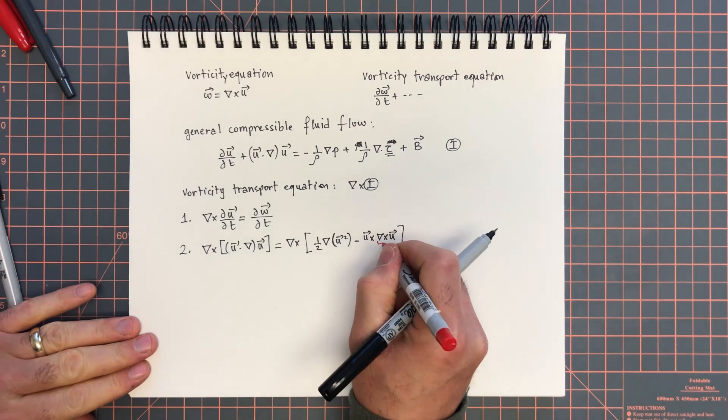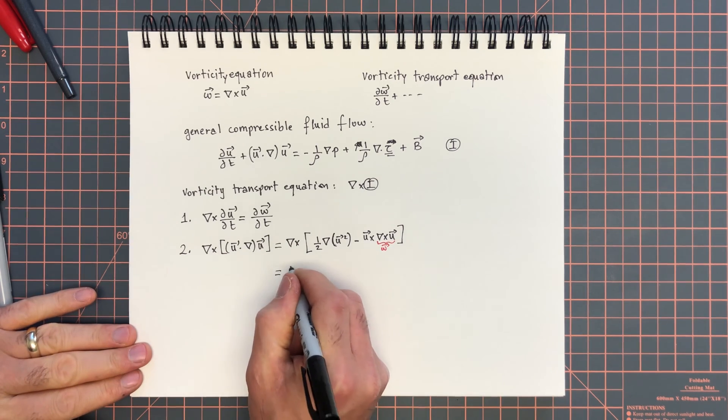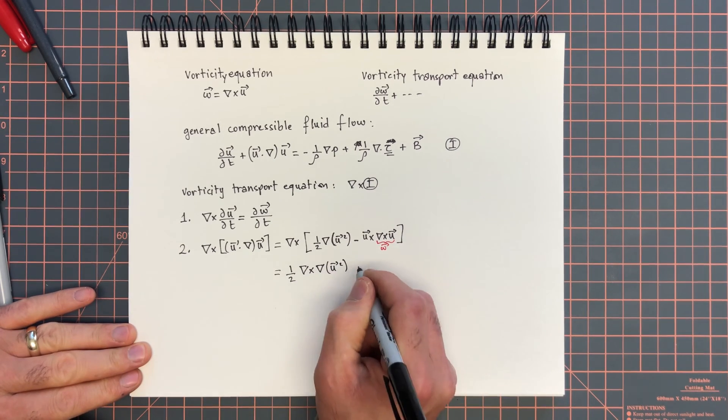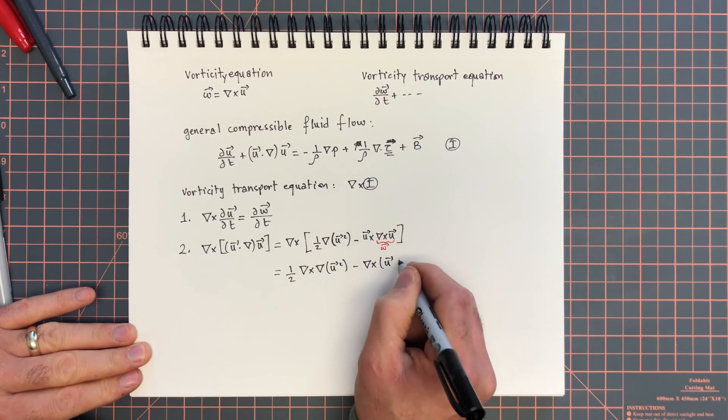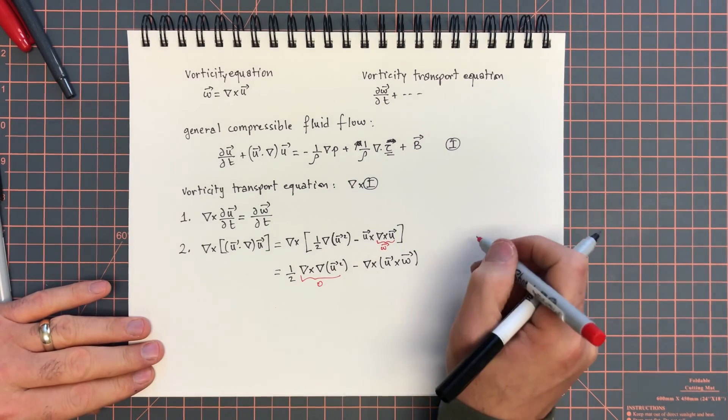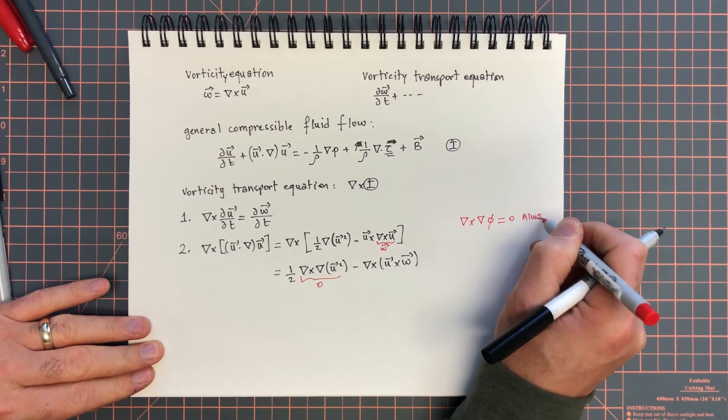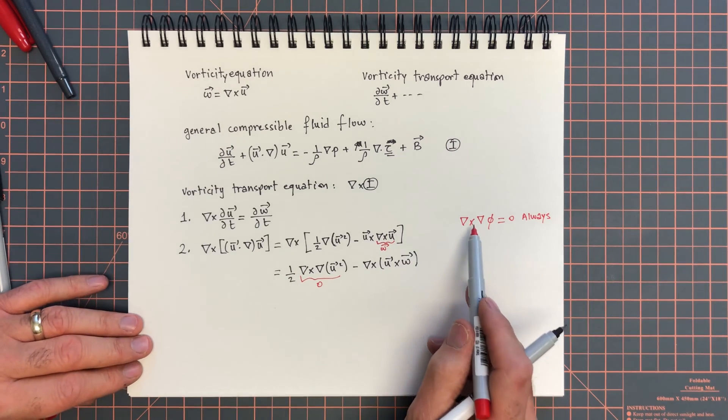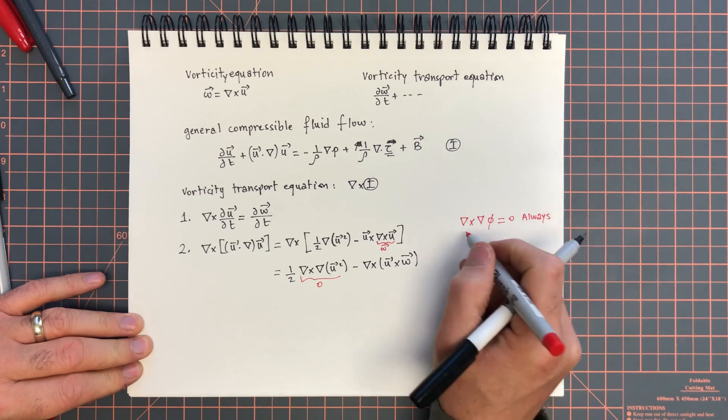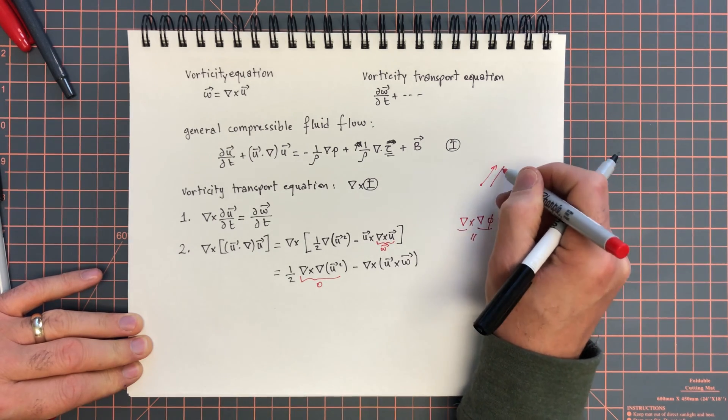This guy over here is omega, and now once we take the curl, we will have 1 over 2 curl grad u squared minus curl of u cross omega. Now, this guy here is 0, because the curl of a gradient of a scalar is equal to 0 always.